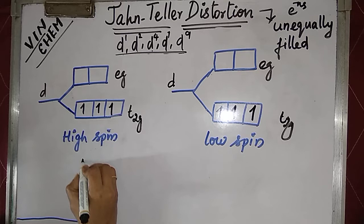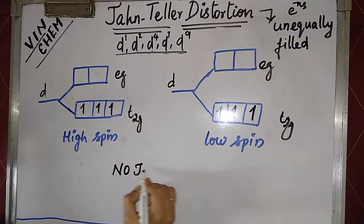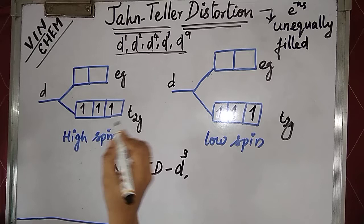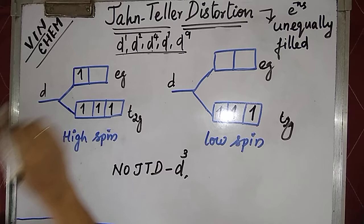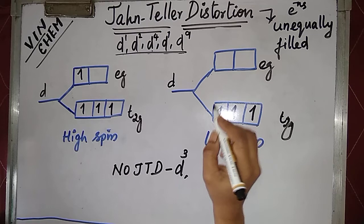With d3, we have equally filled electrons, so no Jahn-Teller distortion. We can write here: no Jahn-Teller distortion for d3. For d4, high spin — there is no pairing, so it moves to the eg level, the doubly degenerate orbitals. d4 distortion is present, as mentioned.